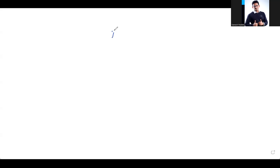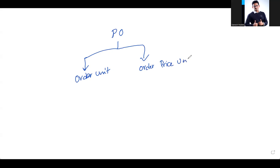So what is the purchase order unit and price unit? Whenever you see a PO there will be two units you generally observe: one is order unit, and the other is purchase order price unit. So mainly these two will be there. The order unit mainly deals about the quantity you are receiving to your warehouse, and all financial postings will deal related to that — most of the financial postings will have an impact.